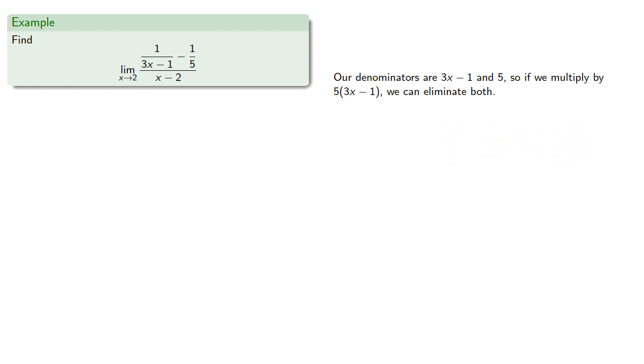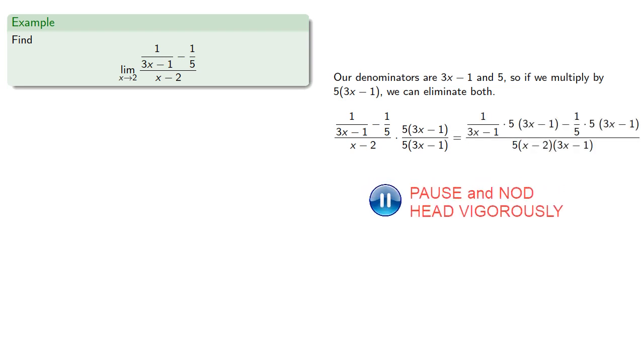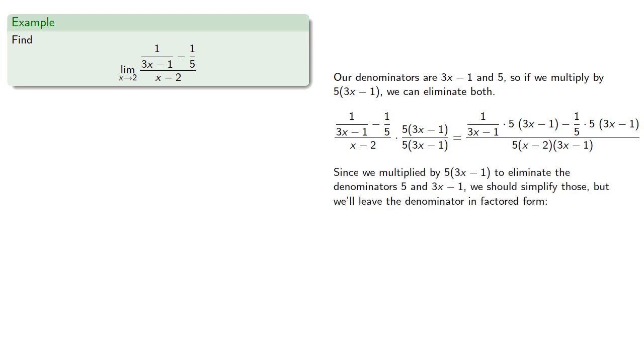So we'll take our expression, multiply by 5 times 3x minus 1 in numerator and denominator, and distribute. Since we multiplied by 5 times 3x minus 1 to eliminate the denominators 5 and 3x minus 1, we should simplify the expressions with those denominators, but we'll leave the main denominator in factored form. So multiplying out our numerator and simplifying it.